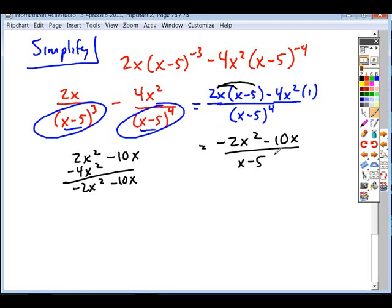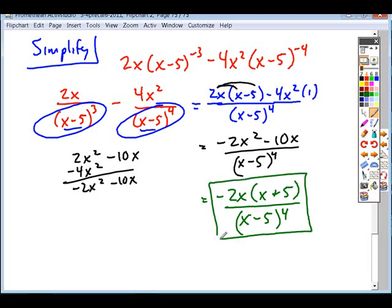Our denominator stays as it is. Now, can we remove any common factors from our numerator? Can we simplify this fraction? Maddie? Okay, so if we take out a negative 2 and an x, that leaves us with a positive x and a plus 5, all over x minus 5 to the 4th. Can anything cancel? No, these weren't like terms, so they don't cancel. So this is the form that we would be looking at.